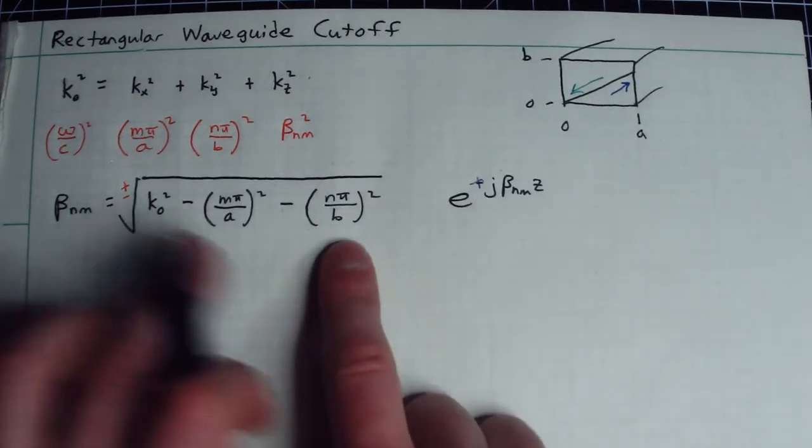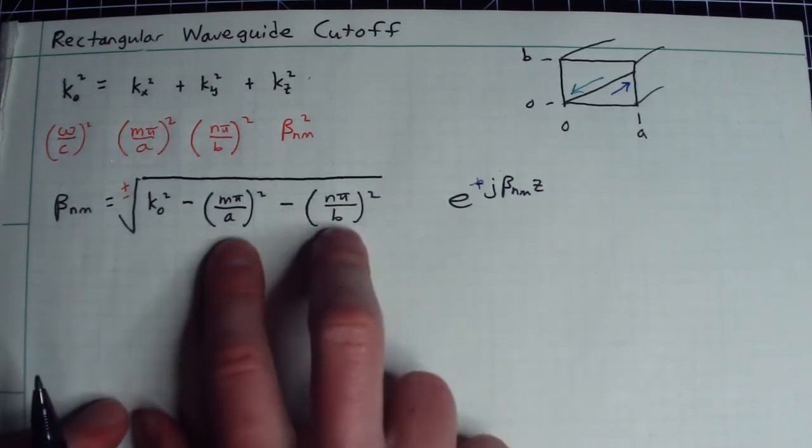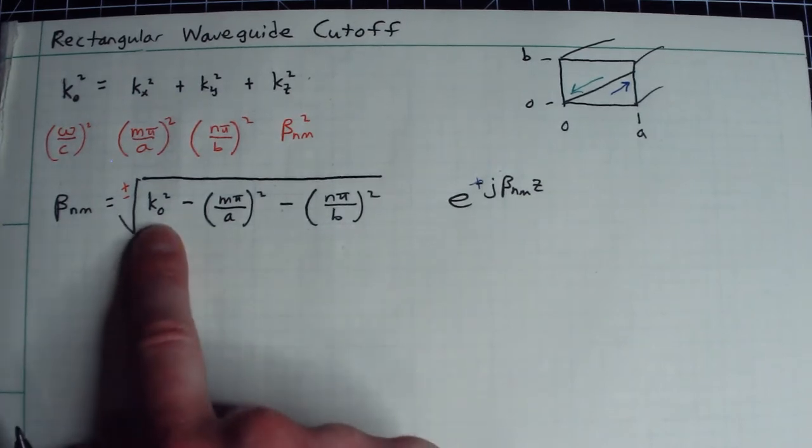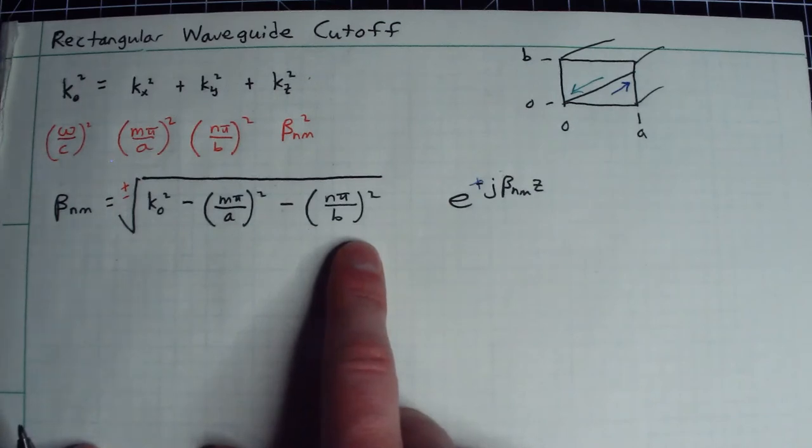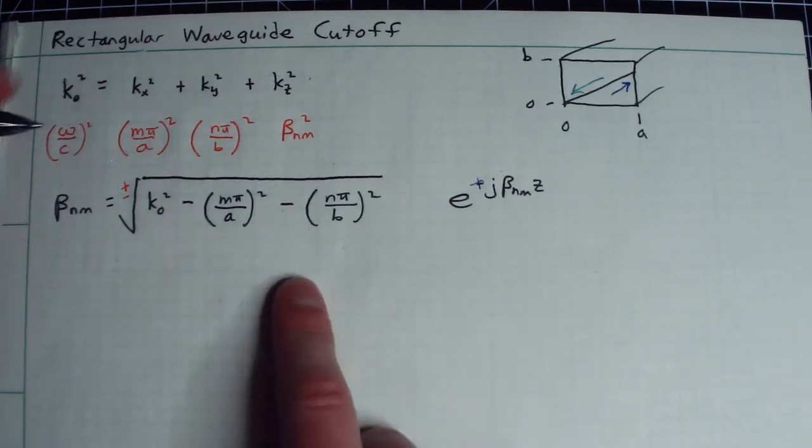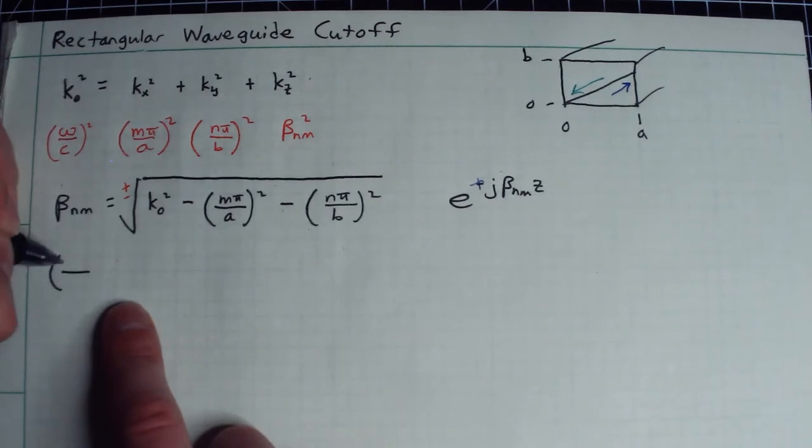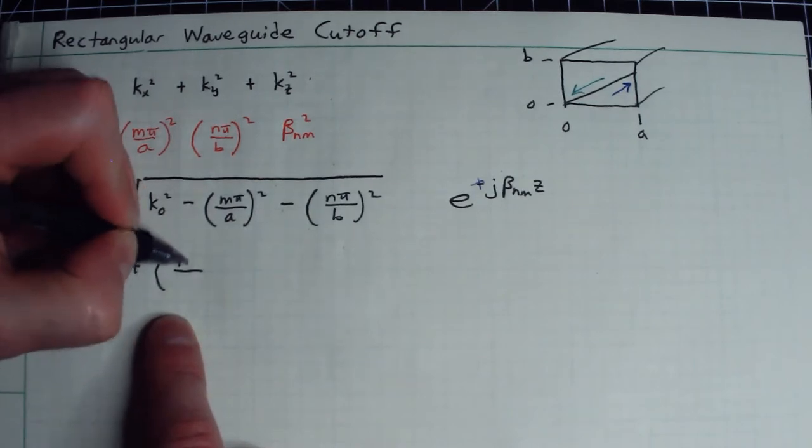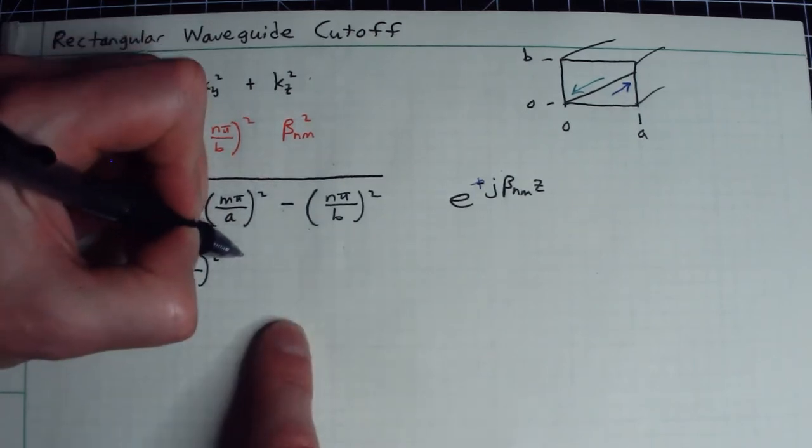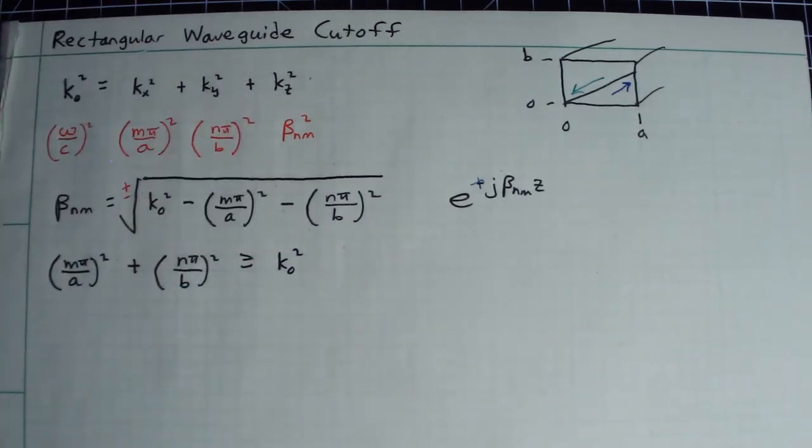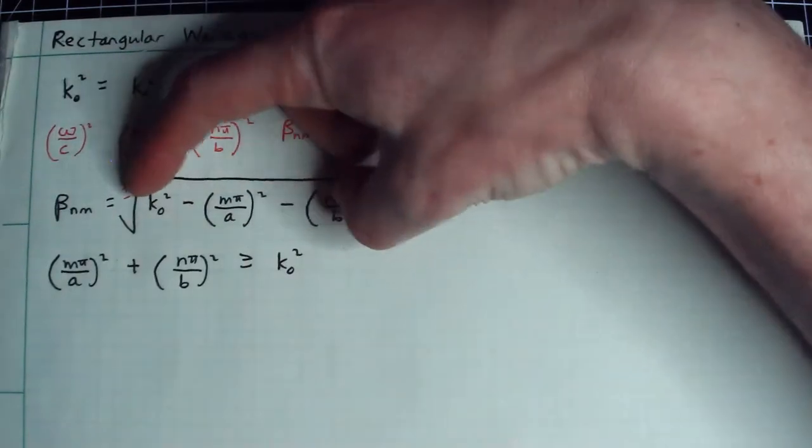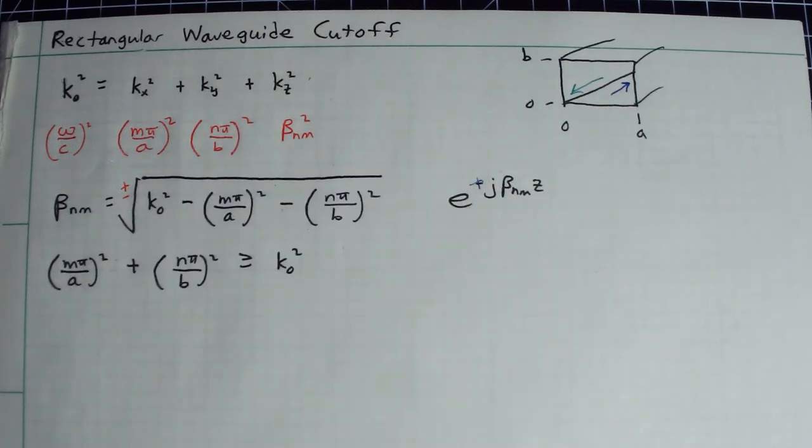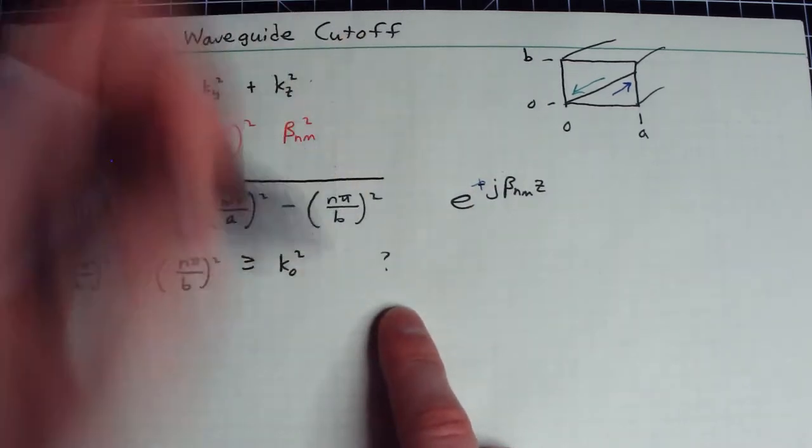So it's important to kind of bear that in mind that both of these positive and negative solutions are perfectly viable because they will both satisfy this relationship. So you look at this, however, and the same argument applies. What happens if my mode numbers keep going higher and higher such that eventually they exceed this value here? Well, then you'll notice you'll get a square root of a negative number. So we'll call this the cutoff condition, where I would say m pi over a squared plus n pi over b squared is greater than or equal to k naught squared. So when they're equal, obviously this whole thing goes to zero and you get no propagation down z. And when they're greater, then you get this square root of a negative number effect.